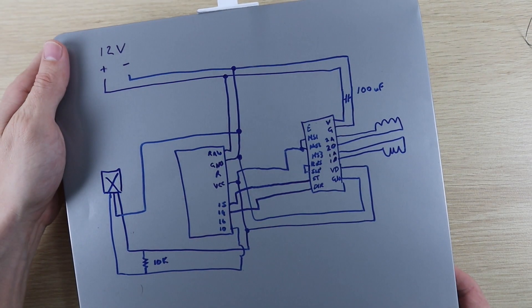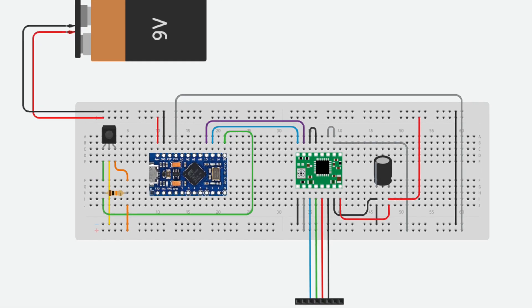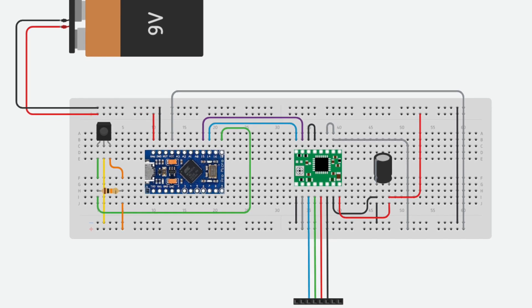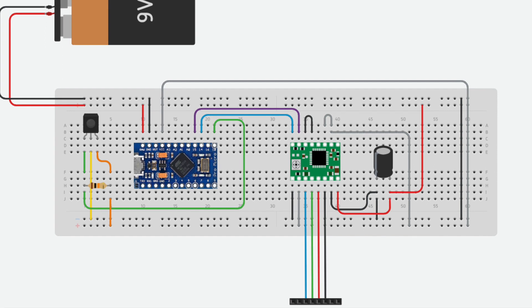I started out with a really bad drawing, which I then transferred into a breadboard layout. The resistor goes across the infrared sensor's 5 volts and data pins and the capacitor across the power supply for the stepper motor driver.